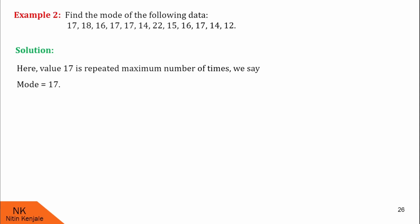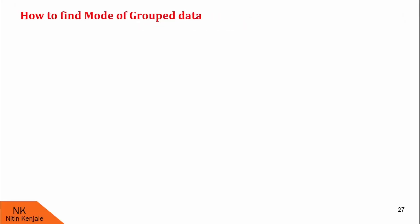I hope you understood both the examples. Now next, we will see how to find mode of grouped data. The mode of the grouped data is the value corresponding to the modal class. Modal class is the class interval with the highest frequency.